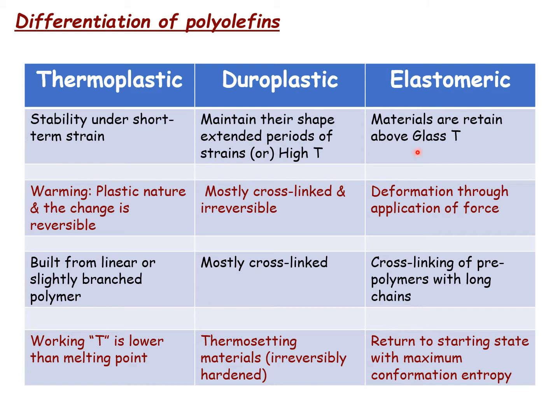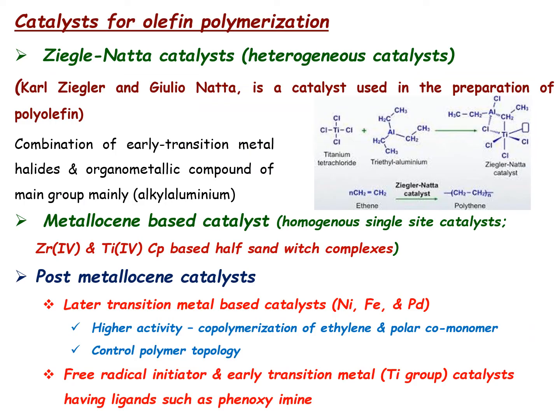Elastomeric materials retain their structure above their glass transition temperature, but they can deform through the application of force — that means when you apply stress they deform. They have cross-linkage of pre-polymer with long chains, giving a long-chain cross-linked polymer series. They return to the starting state with maximum conformational entropy when pressure and temperature are applied. These are the three major classes of polymeric materials.